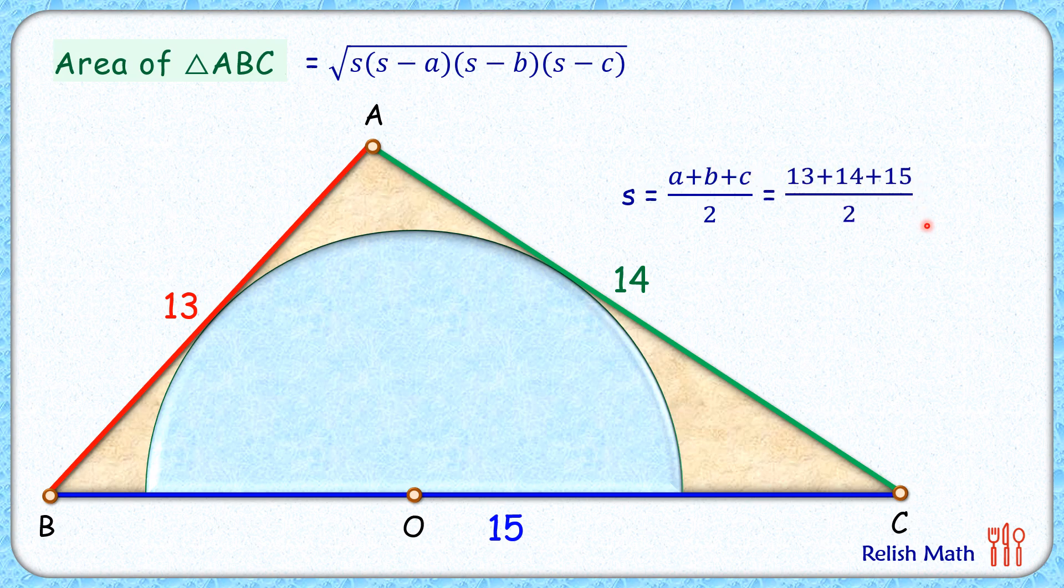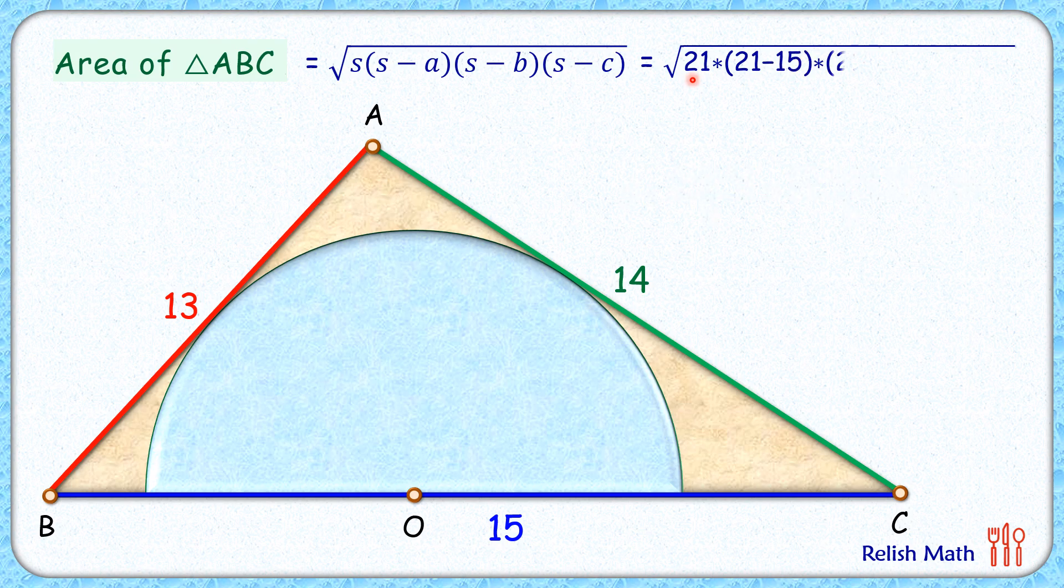Now putting these values where a, b, c are representing the sides, we get area as square root of this. Simplifying it, we'll get the area of this given triangle as 84 centimeter square.